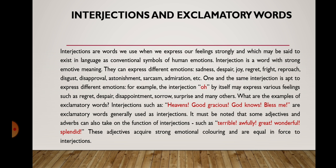One and the same interjection is apt to express different emotions. For example, the interjection 'oh' by itself may express various feelings such as regret, despair, disappointment, sorrow, surprise, and many others. Examples of exclamatory words include interjections such as 'heavens,' 'good gracious,' 'God knows,' 'bless me,' which are generally used as interjections. It must be noted that some adjectives and adverbs can also take on the function of interjections, such as 'terrible,' 'awfully,' 'great,' 'wonderful,' 'splendid.'